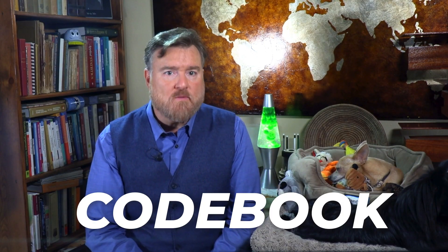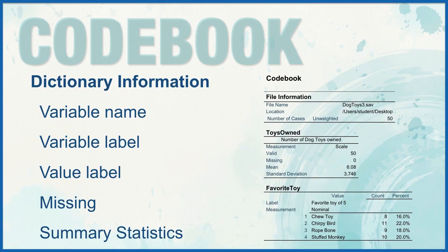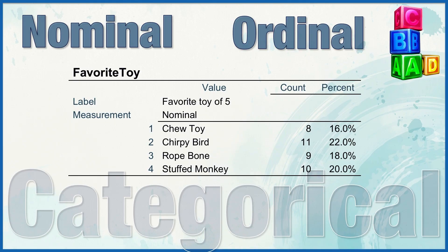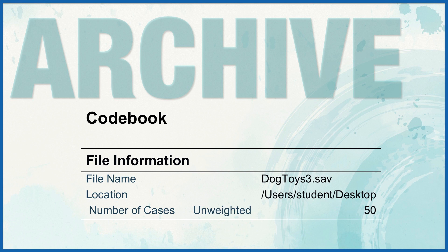What if I want to collaborate with you, and I want to show you the most important information about the DogToys data, like some of the summary statistics and the structure of the variables? The answer is to create a codebook of the dataset. A codebook reports the dictionary information, such as variable names, variable labels, value labels, missing values, and the summary statistics for all of your variables, or for just the variables that you specify. The nominal and ordinal variables are summarized as counts and percentages. Scale variables are summarized with the mean, standard deviation, and quartiles. The codebook is also a handy way to archive your data for reference while you are doing an analysis, and when you return to the data and want to remember what was in that dataset, you will have the codebook to guide you.